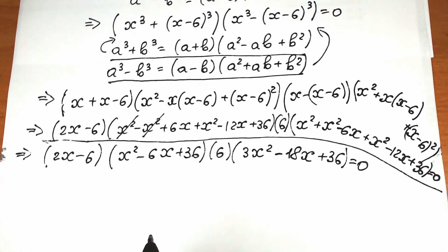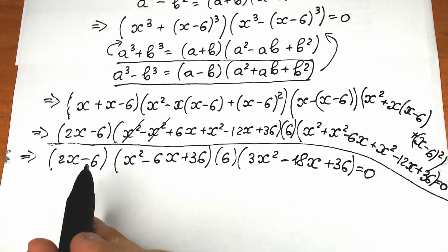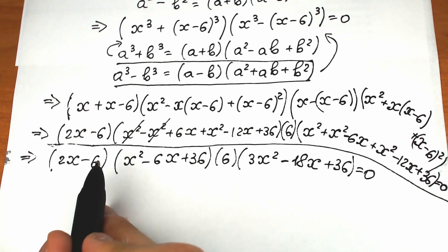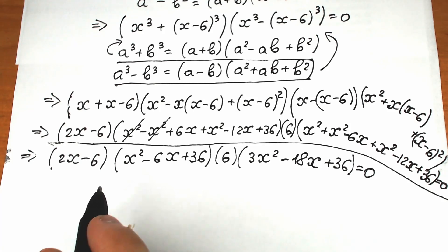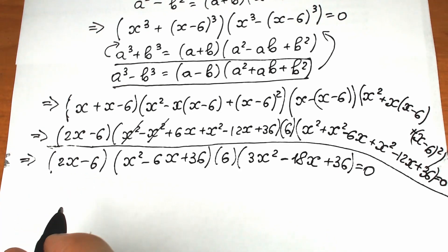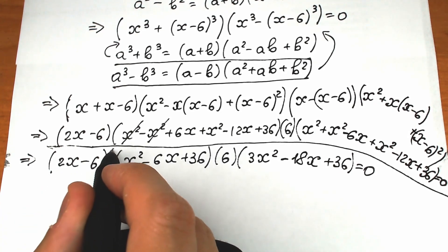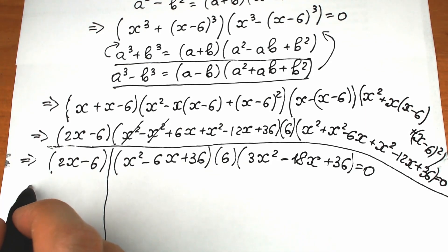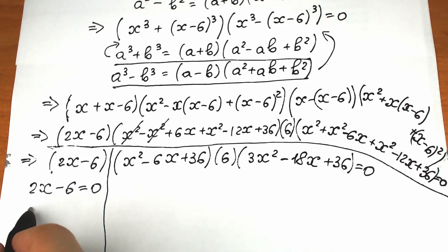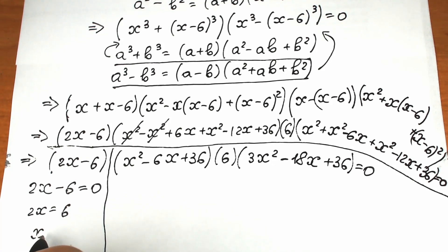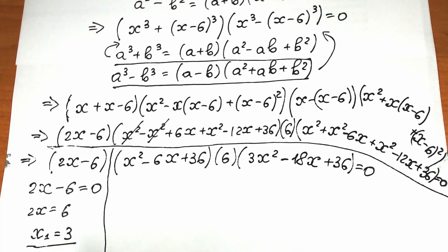We have a product of four parentheses equal to zero, meaning each one can equal zero independently. Starting with the first: two x minus six equals zero, so two x equals six, giving us x₁ equals three. We found our first solution.